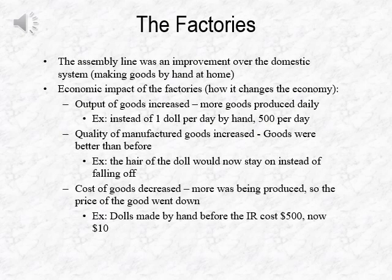The assembly line was an improvement over the domestic system, which was when people made goods by hand at home. The economic impact of factories is that the output of goods increased, so more goods were produced daily. The quality of manufactured goods increased with more standardization in the process. And the cost of goods decreased — since more was being produced, the price of individual products went down.